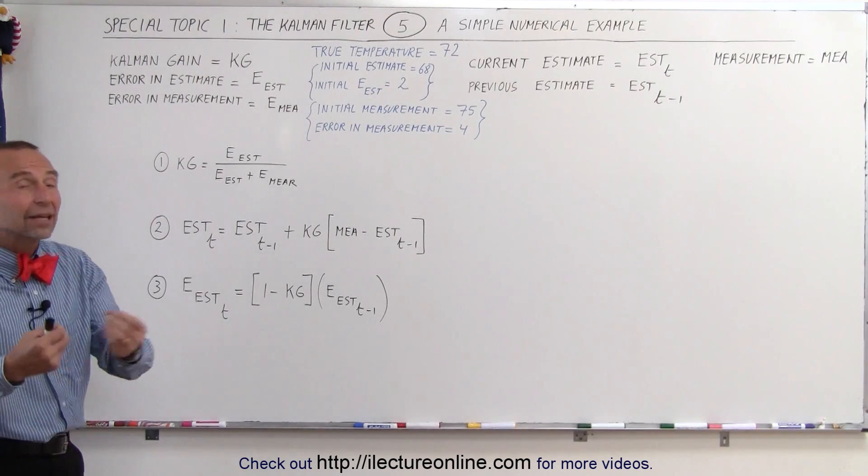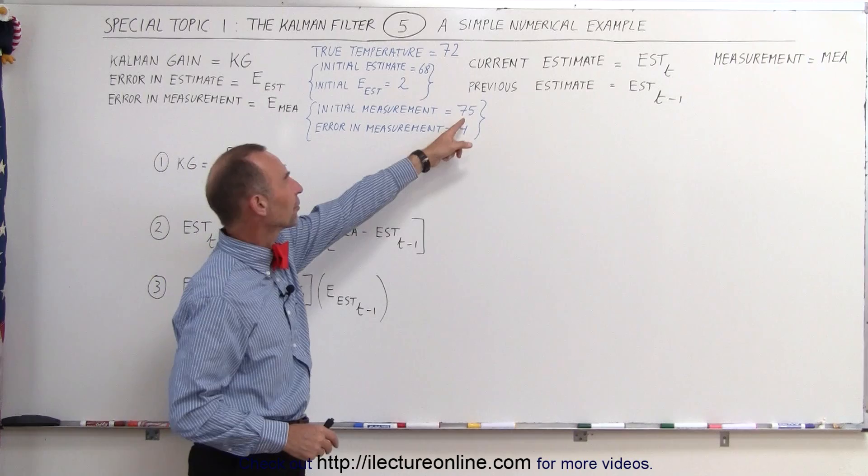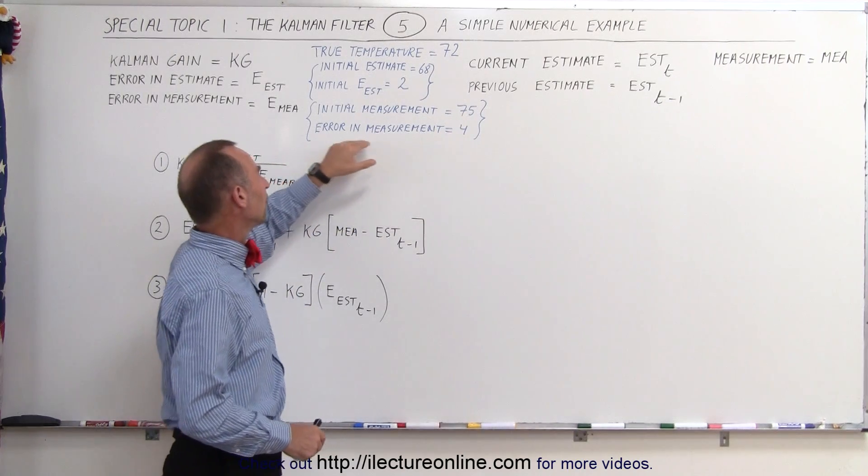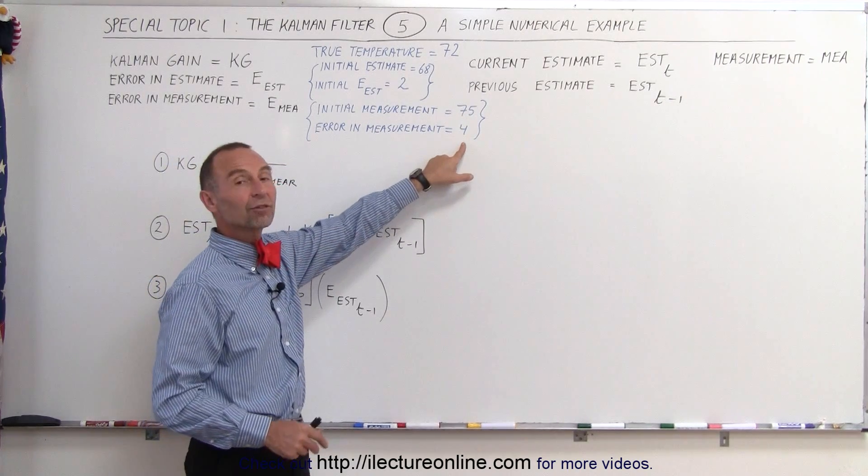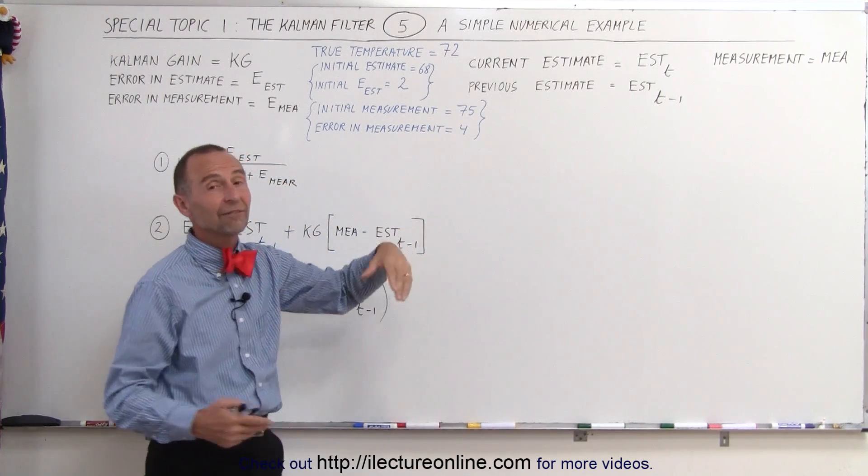The initial measurement, let's say we take initial value with a certain thermometer, it's not so accurate, it gives a value of 75 and we know that the error in the measurement can be as high as 4, in other words plus or minus 4, that means that the true value lies somewhere between 79 and 71.